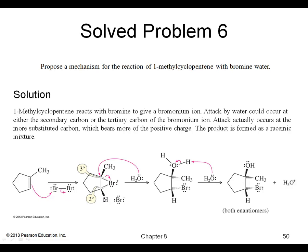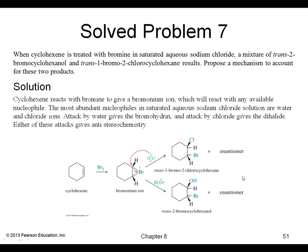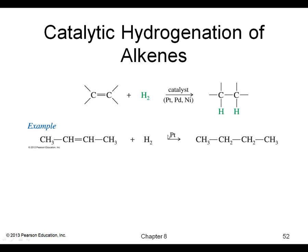Here's another example showing the alcohol ending up Markovnikov. Our next reaction is hydrogenation of double bonds. We typically use hydrogen gas with one of three catalysts: platinum, palladium, or nickel. The two hydrogen atoms add across the double bond, transforming it to a single bond — saturating the double bond.